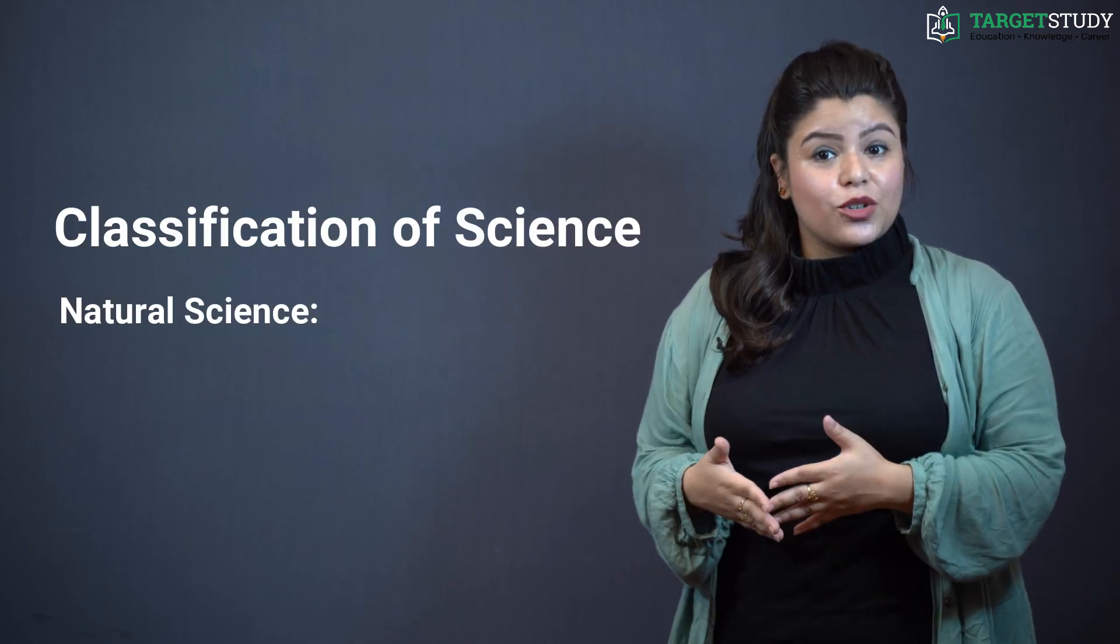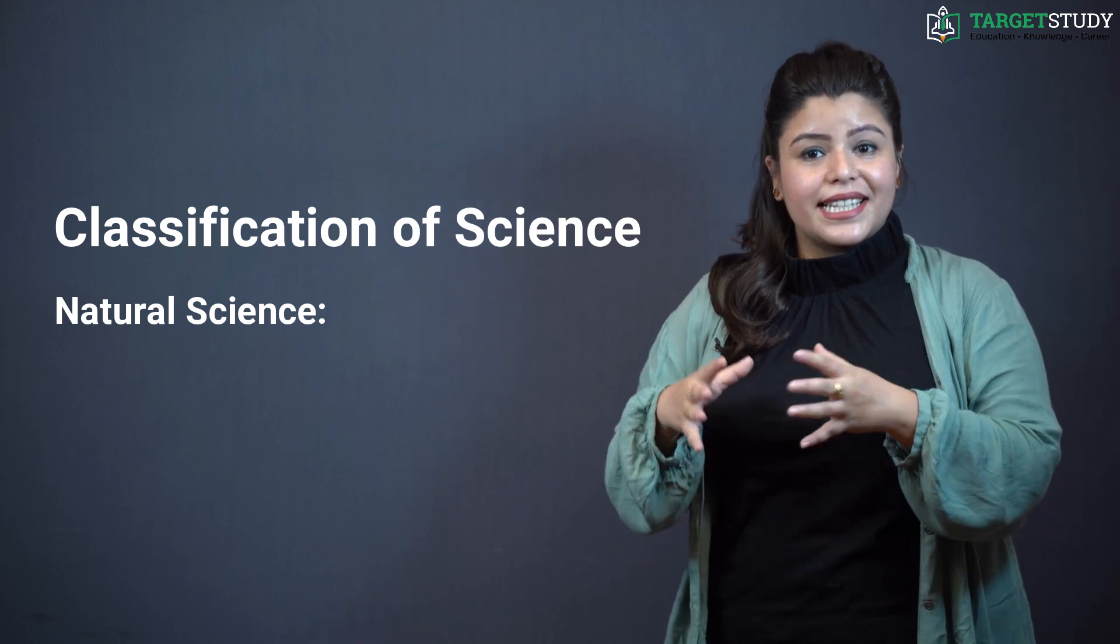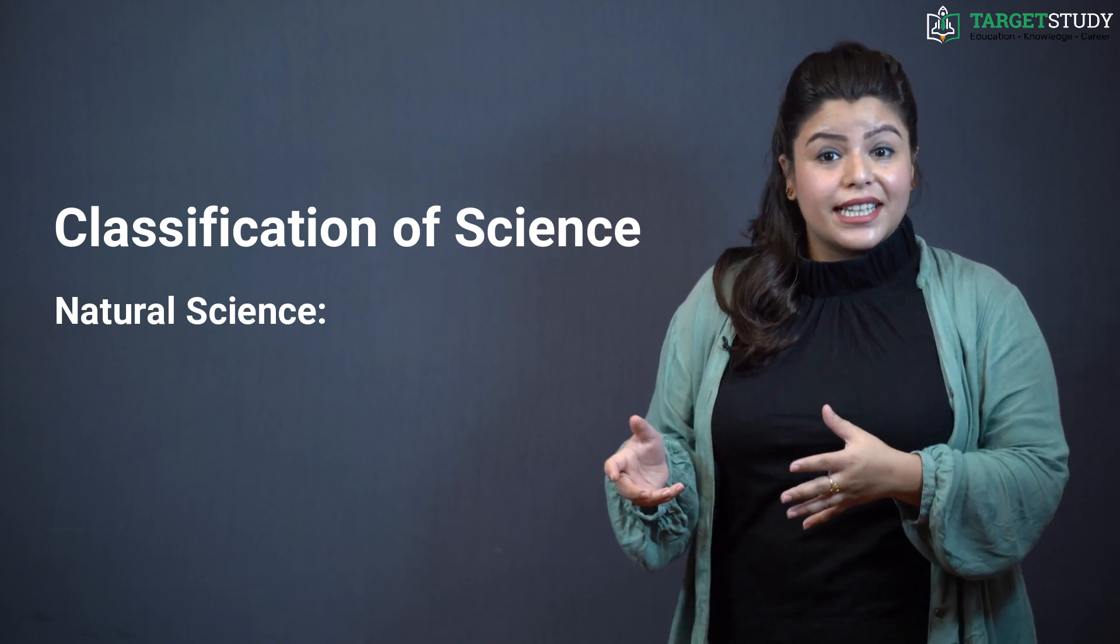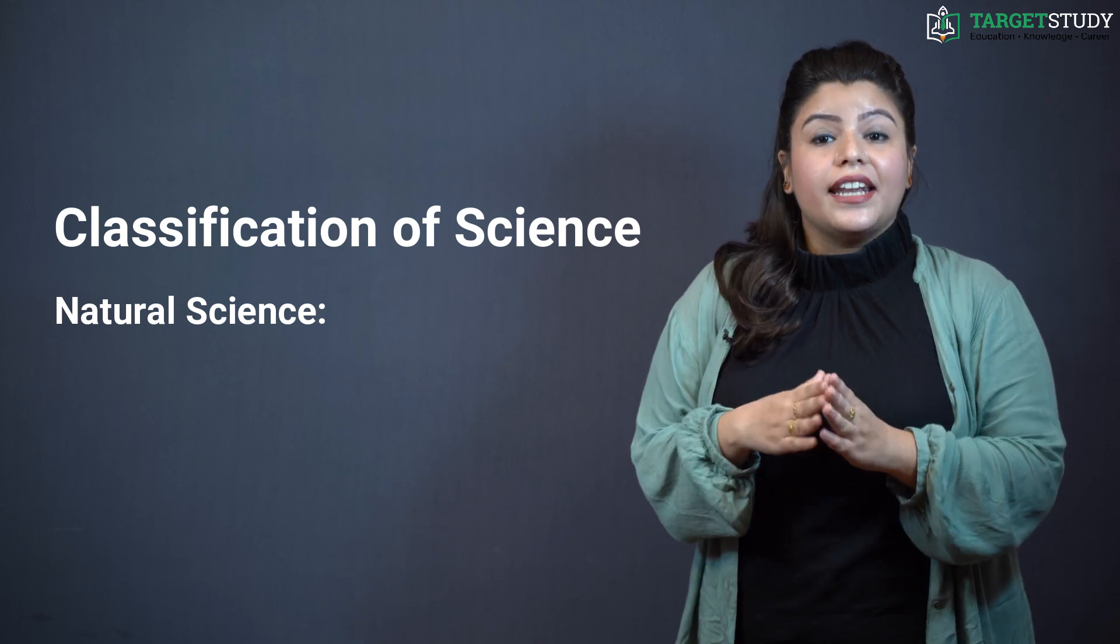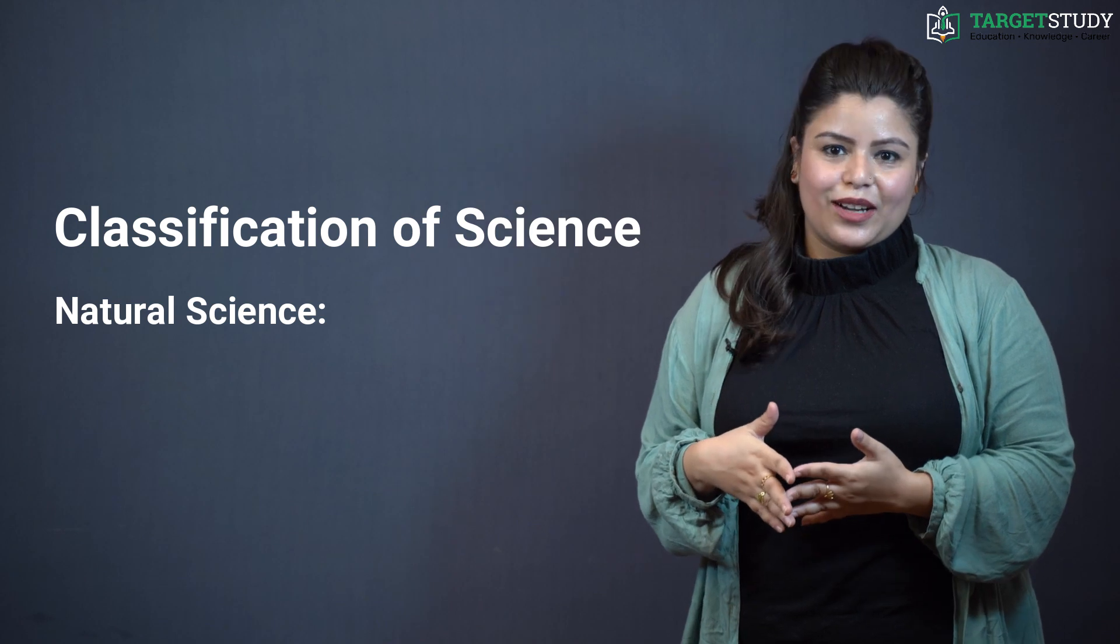Let's now talk about natural science. It is the study of objects and phenomena existing in nature, especially biology, chemistry, physics and interdisciplinary related sciences. Natural science consists of five main studies. So we'll be talking about that now.